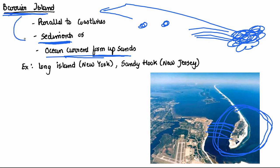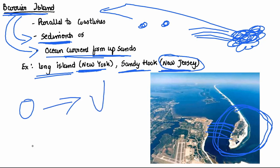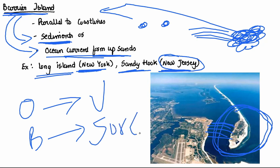Barrier islands form in two ways: due to sediments or due to ocean currents depositing sands. Long Island in New York and Sandy Hook in New Jersey are examples — these may be asked in match-the-following questions. To summarize: oceanic islands relate to volcanoes; barrier islands relate to sediments or ocean currents; continental islands were part of continents; and coral islands are formed by corals — Maldives being an example.